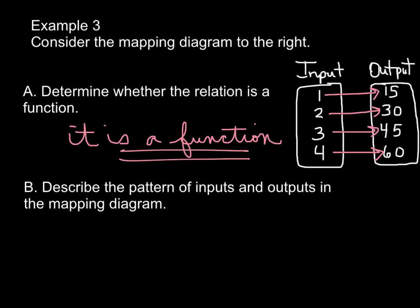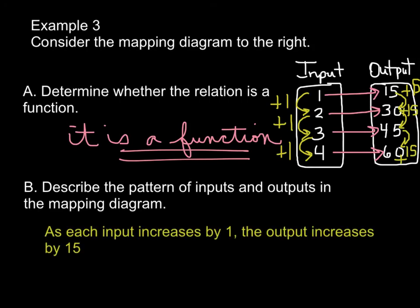Now we have to describe the pattern of inputs and outputs in the mapping diagram. This is where we use what we know about slope. If we look at our inputs, what's happening each time? 1 to 2, 2 to 3, 3 to 4. Your input is increasing by 1. What's happening to your output? Each time this is increasing by 15, plus 15, plus 15. So we have to put that in words. In words, we would say: as each input increases by 1, the output increases by 15.